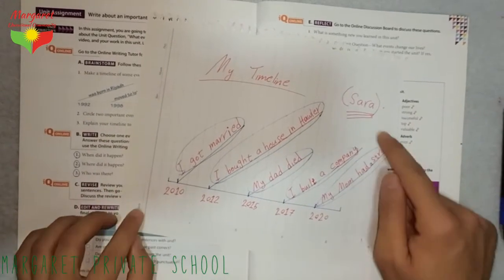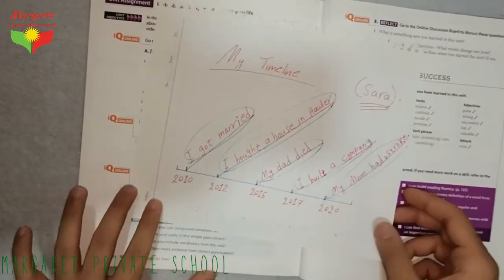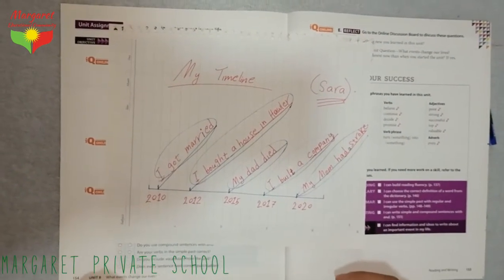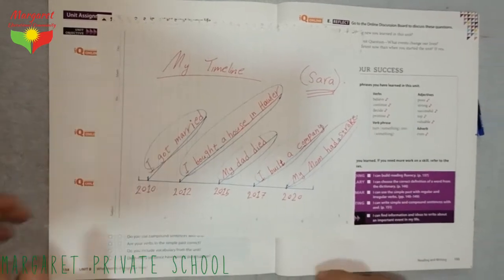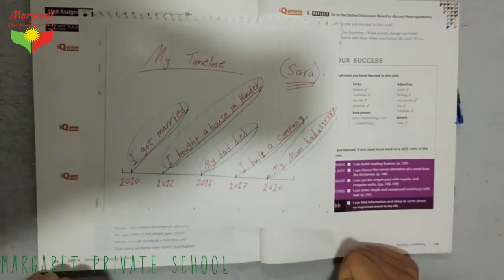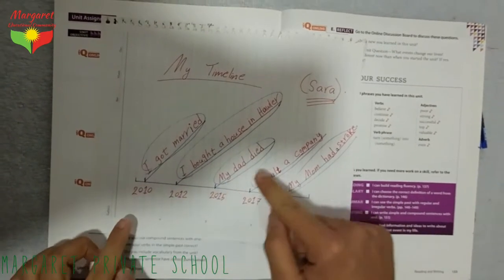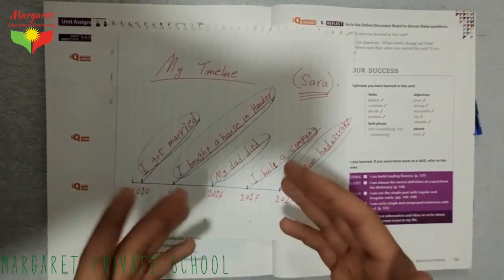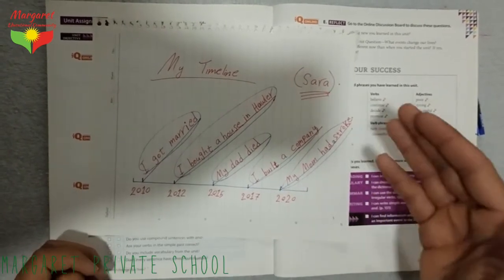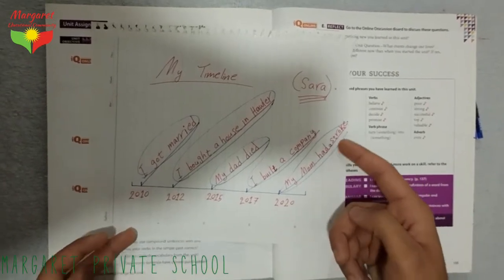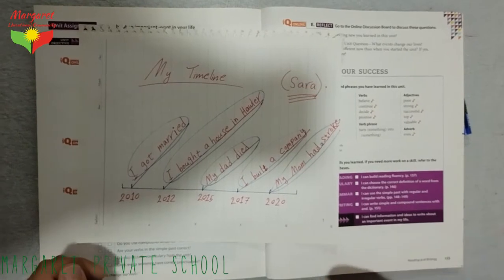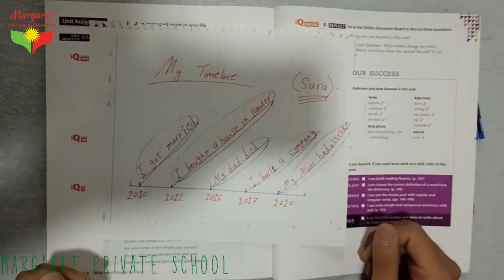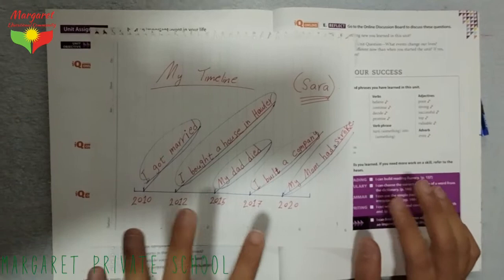This is a timeline of Sarah. Sarah made this timeline. Sarah is talking about important events in her life from 2010 to 2020. In 2010, she got married. In 2012, she bought a house in Hawler. In 2015, her dad died. In 2017, she built a company with her husband. And in 2020, her mom had a stroke.